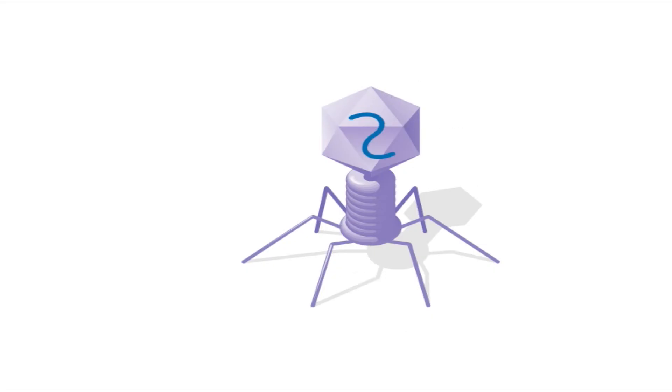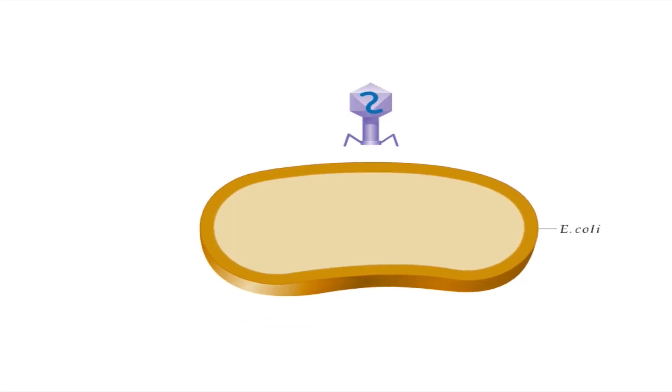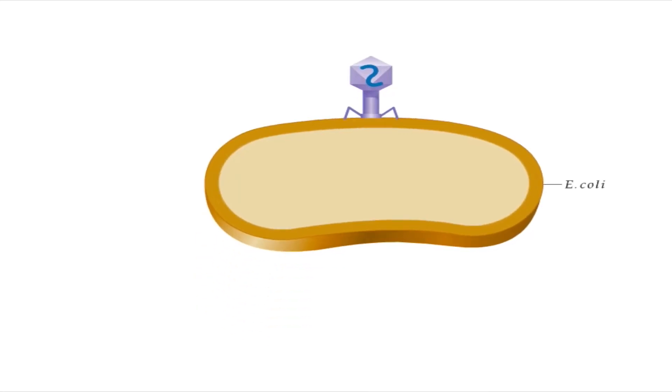When T2 comes in contact with E. coli, the phage attaches to the bacterium by its tail. Next, the phage injects genetic material into the cell. The genetic material directs bacterial enzymes to produce viral offspring.